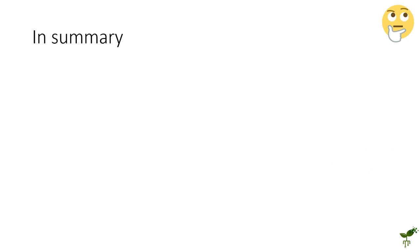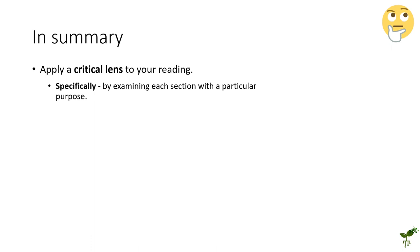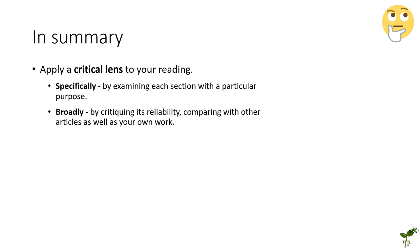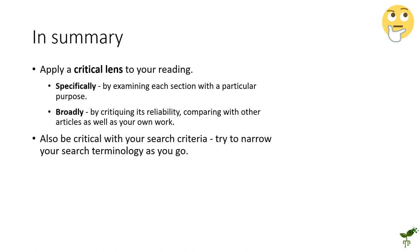In summary, being a good reader involves not just reading and interpreting the information, but also applying a critical lens to what you are reading. You can do this in a specific manner by looking at each individual component with a particular lens or purpose, or you can do this more broadly by comparing the text as a whole to other sources and looking at its reliability as a whole. Try to also be critical with your search criteria as you go along — try and narrow as you go and be very selective with what you select. Thank you for listening.